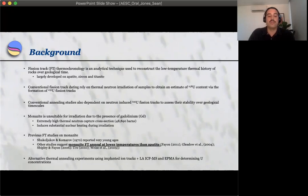So with the development of alternative thermal annealing experiments using implanted ion tracks, as well as laser ablation inductively coupled plasma mass spectrometry and electron microprobe analysis for determining uranium concentrations, this has opened up the door for monazite to be assessed.